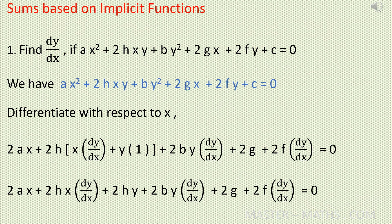Let us see some sums based on implicit functions. First one: find dy by dx if ax squared plus 2hxy plus by squared plus 2gx plus 2fy plus c equals 0. This is a second degree quadratic equation. To find dy by dx, differentiate each term with respect to x. First term: ax squared. On differentiating this, a is a constant, so keep it as such.